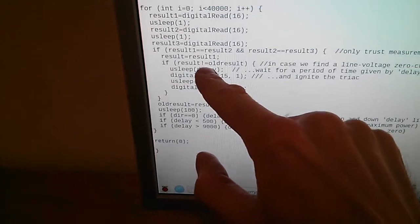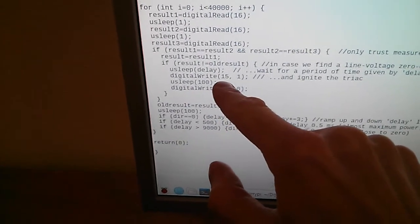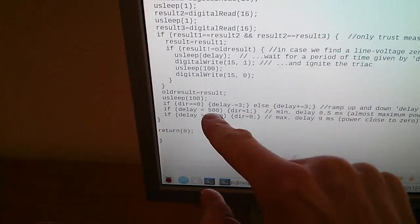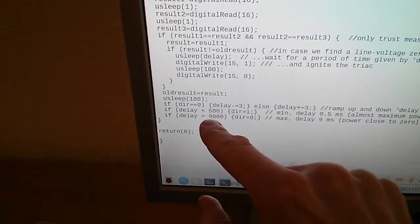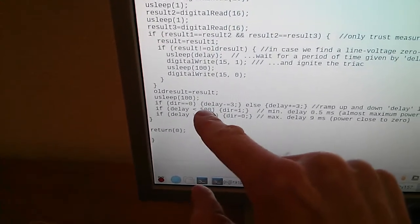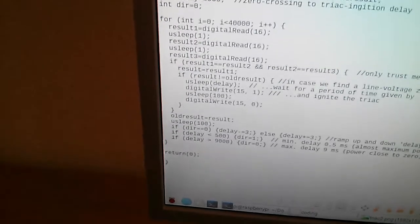And then after a certain delay, I'm igniting the triac. And this delay varies from 0.5 to 9 milliseconds. So this here is in microseconds. So that's 0.5 to 9 milliseconds.